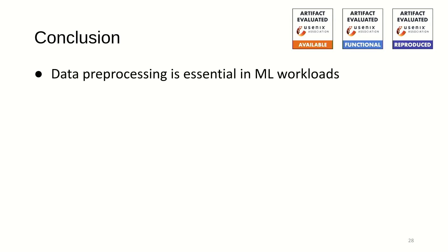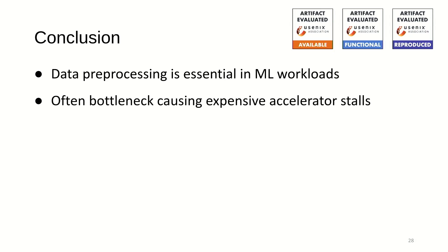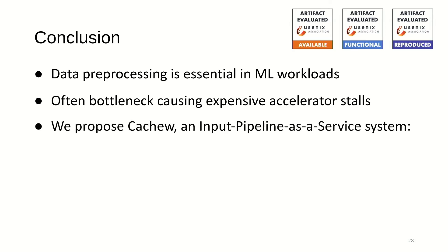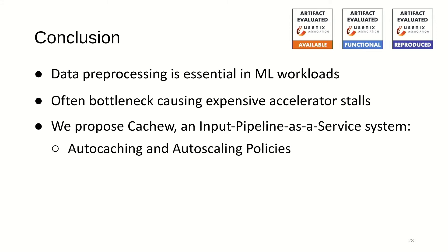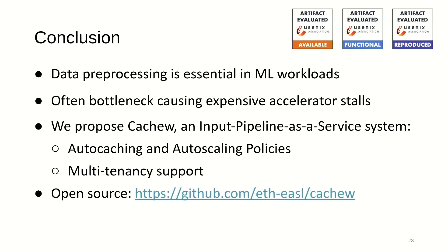To wrap up, we believe that data preprocessing is an essential part of ML workloads. It is often a source of bottlenecks that cause expensive accelerator stalls and wasted time. To address this, we propose CacheU, an input pipeline as a service system, bringing auto-caching and auto-scaling policies along with multi-tenancy support. It's open source and we believe it's a rich platform for future research in this area. Thank you very much.